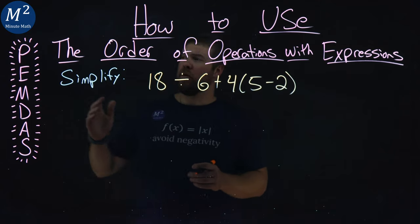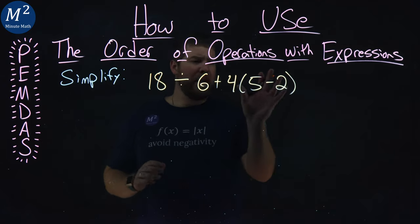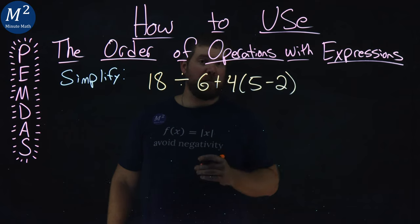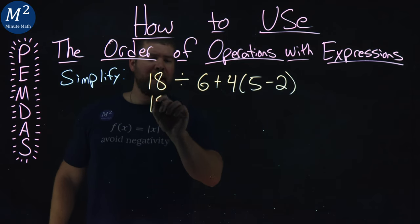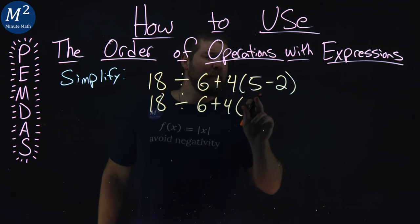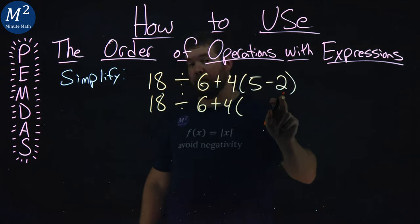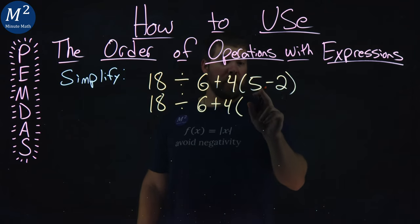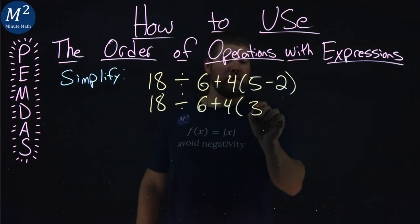Well, let's go simplify this. Let's start with our rules. Parentheses first. So anything that's in the parentheses, we need to simplify first. So I'm going to write down everything else. 18 divided by 6 plus 4, and I'm going to deal with what's inside the parentheses. The only operation here is subtraction. 5 minus 2 is a 3.